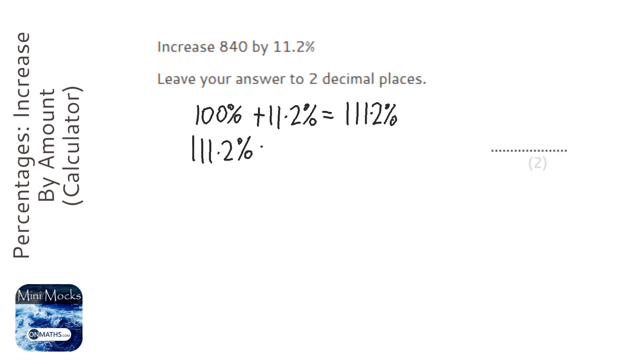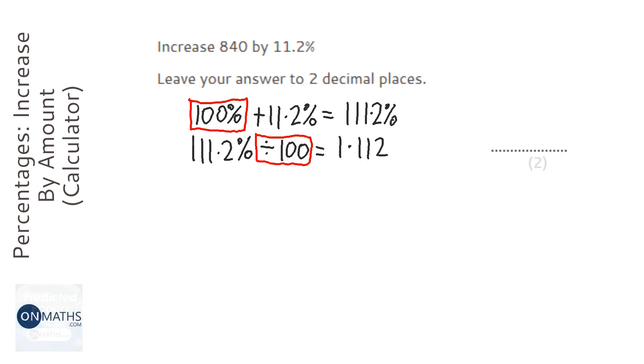on the calculator, so we need to convert it to what we call a multiplier or basically a decimal. So we're going to divide it by 100, and we always divide by 100, so it's 1.112. Now the bit where we start off with 100 is always the same, and the bit where we divide it by 100 is always the same. So if you increase it by 9.4 percent, all of this would be the same apart